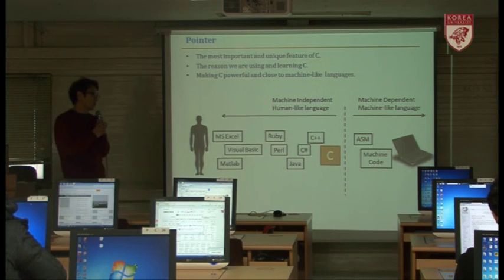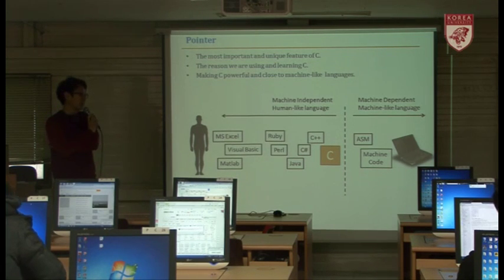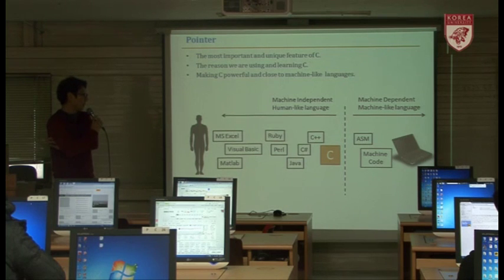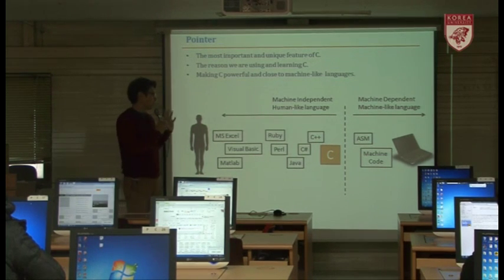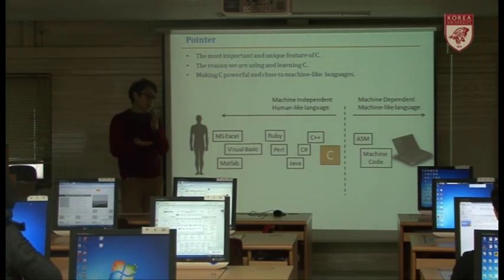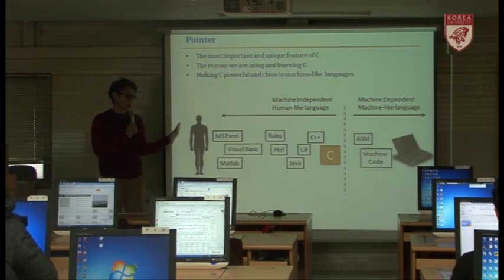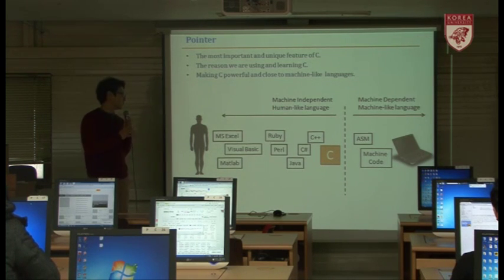Instead, in order to design and implement high-level algorithms for computation, we like to use human-like languages, which are machine independent. That means if you write a program in Java or Perl, that code can be executed on any other machines. Once you have a program code that can run on any machine, that's the machine-independent one.